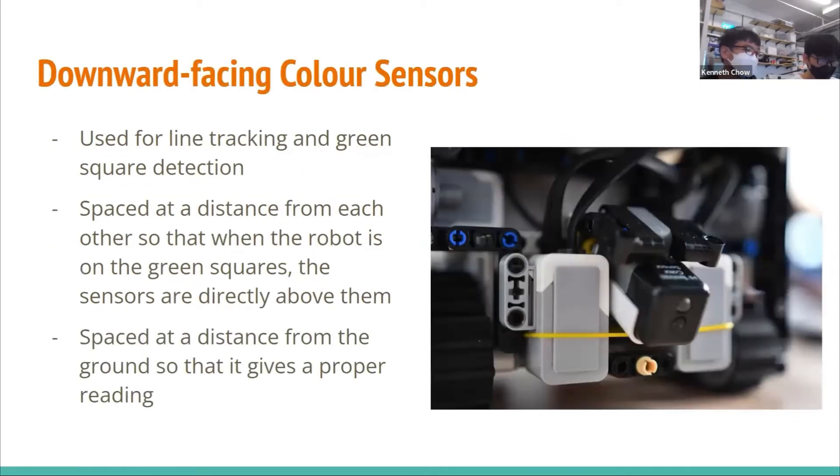Now, I am going to talk about the downward-facing color sensors. They are used for line tracking and green square detection. They are spaced at a distance from each other, so that when the robot is on the green square, the sensors are directly above them. The color sensors are also spaced at a distance from the ground so that it gives a proper reading.